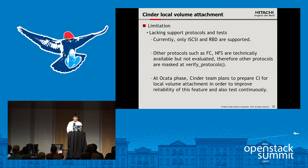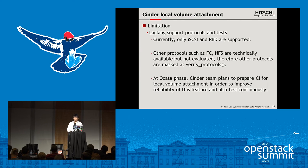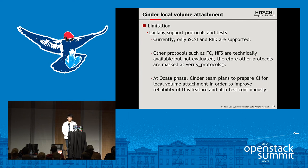Currently, the Cinder brick extension has limitations due to lacking protocol support and tests. The extension only supports iSCSI and RBD. Other protocols such as FC and NFS are technically available but not evaluated, so they are masked by the verify-protocol functionality. At the OpenStack Cinder team meeting, there is a plan to prepare CI for local volume attachment in order to improve reliability and enable continuous testing.